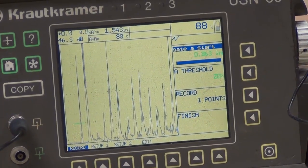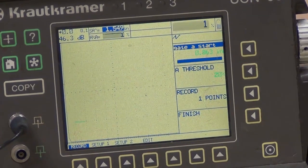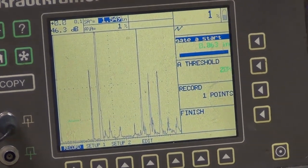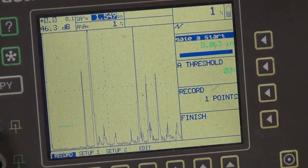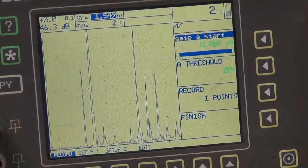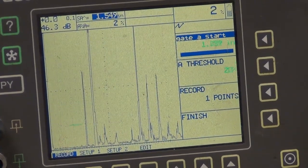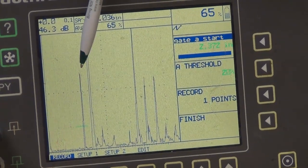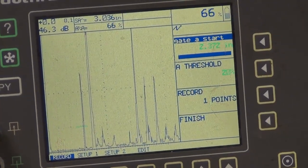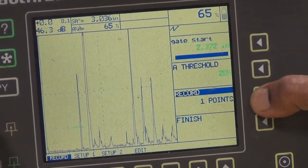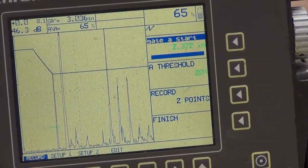Then it says go to the second signal. I move the gate on the second signal. The second signal is about 65 percent in amplitude, and I record this one. So we have two points now.